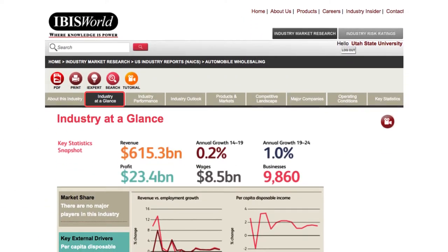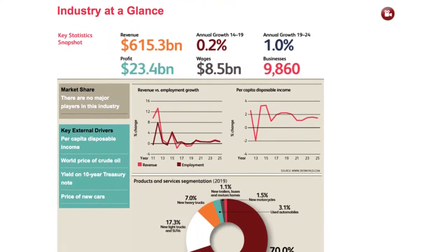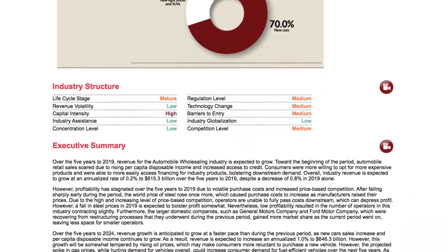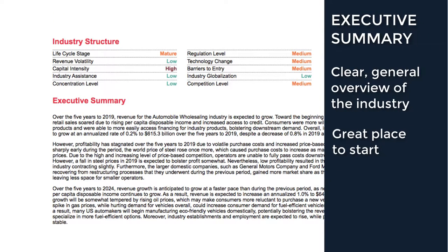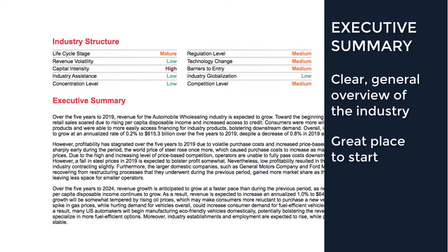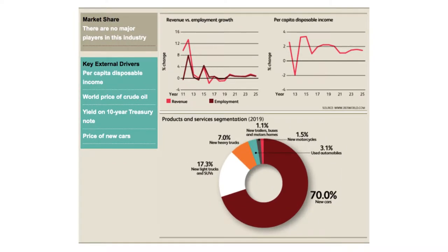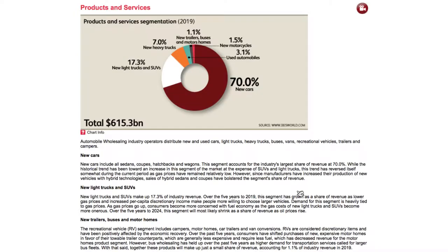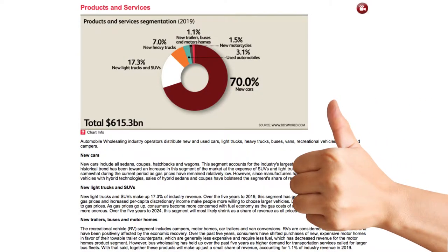Next, we have the Industry at a Glance. This section is critical as it provides key statistics and an executive summary. It can also help you get the big picture for an understanding of the industry. Notice that a lot of the graphics here are hyperlinks, and you can click a relevant item to be taken to a more in-depth analysis.